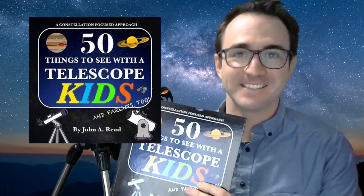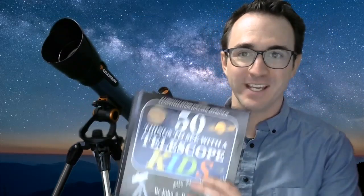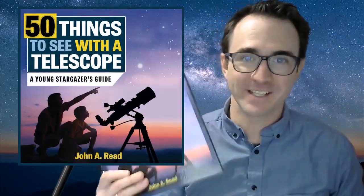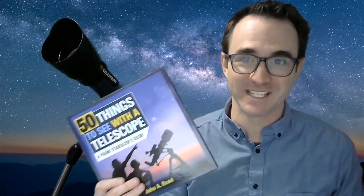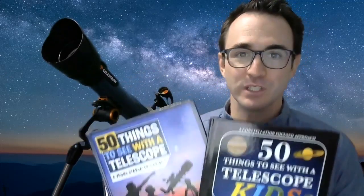For the kids, definitely consider 50 Things to See with a Telescope Kids, or 50 Things to See with a Telescope Young Stargazer's Guide. The kids version was originally self-published, and the Young Stargazer's Guide is what happens when that book gets picked up by a publisher. These books have a lot of overlap in content, so I recommend getting one or the other, but they're both great.